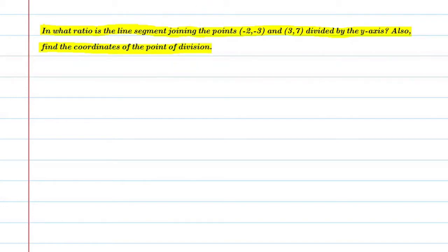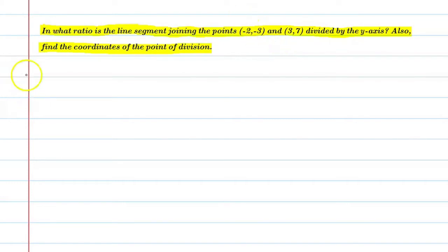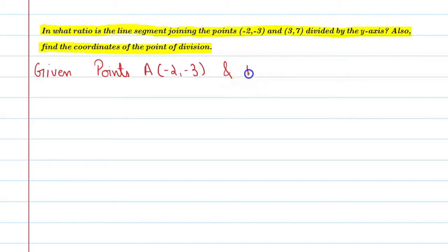So students, basically is question में हमें यह कहा गया है कि अगर ये दो points हैं जो एक line को join करते हैं — line joining के ये दो coordinates हैं — इसको divide करते हैं by the help of y-axis. तो बताइए y-axis इसको किस ratio में divide करेगी और किस coordinate पर division करेगी। Given: first point A is minus two comma minus three and second point B is three comma seven. Division हो रहा है y-axis पर।